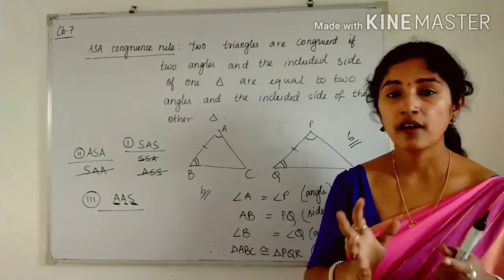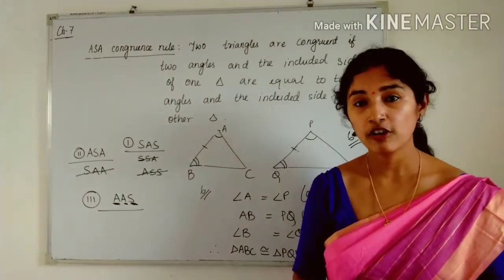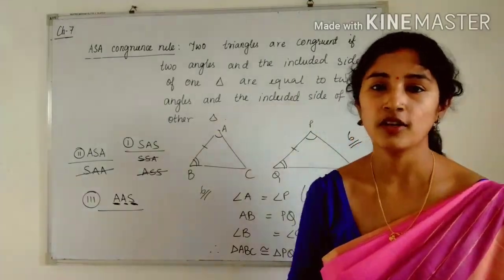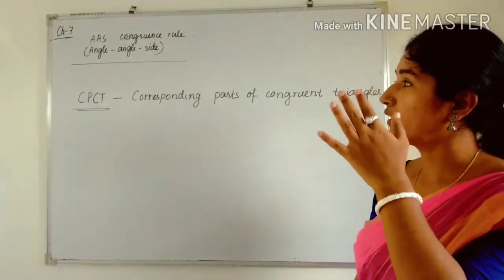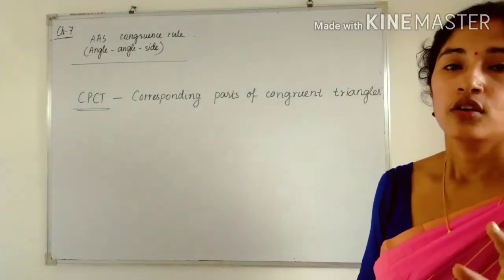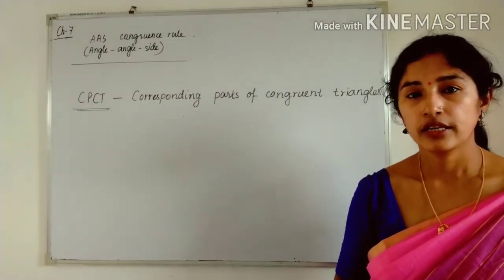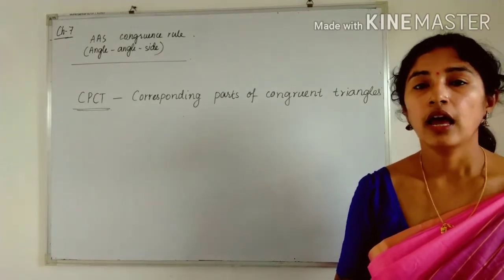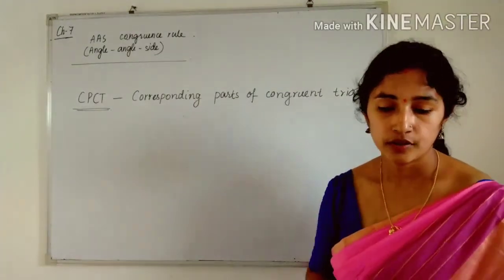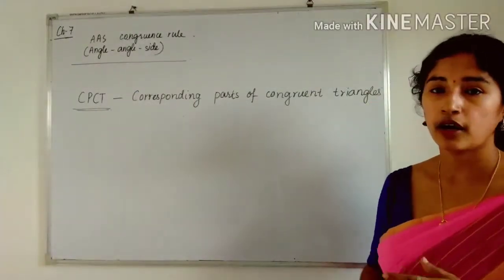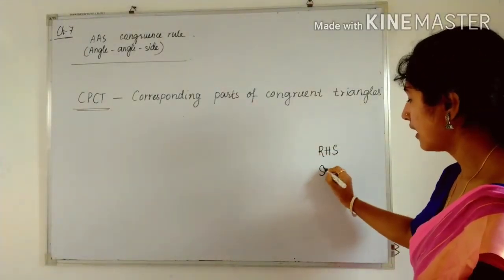CPCT means the remaining parts which are left behind are also equal — but only when the triangles are congruent. So we have studied three criteria of congruency: SAS, ASA, and AAS — the Angle-Angle-Side rule. The remaining two criteria I will discuss in the next lecture: RHS and SSS. SSS means Side-Side-Side, and RHS means Right Angle-Hypotenuse-Side.